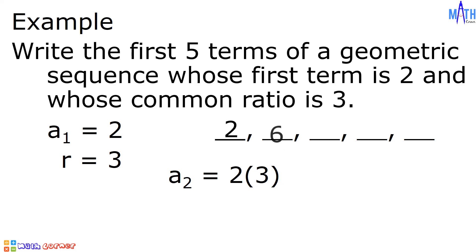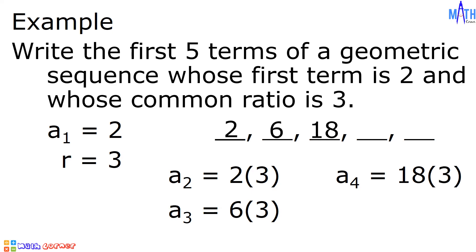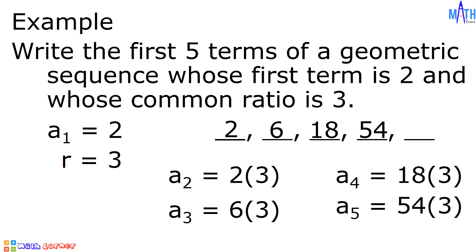The answer is equal to 6. To determine the third term, 6 times 3 is equal to 18. The fourth term: 18 times 3 is equal to 54. And the fifth term: 54 times 3 is equal to 162. The first five terms of a geometric sequence whose first term is 2 and common ratio is 3 are 2, 6, 18, 54, and 162.